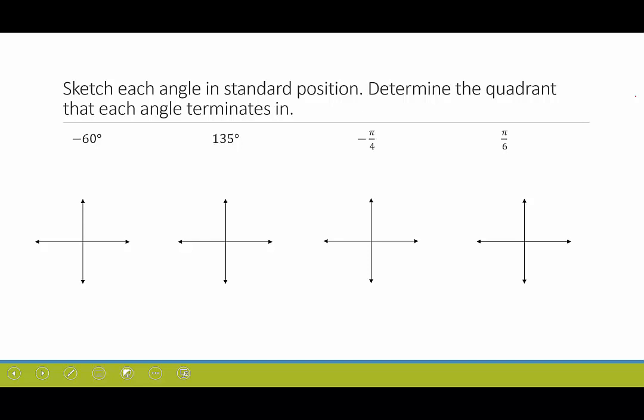What we're going to do now is sketch each angle in standard position and determine the quadrant it terminates in. I usually start with what I call the four corners. If the terminal side and the initial side are both along the positive x-axis, that would be zero degrees.